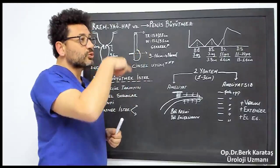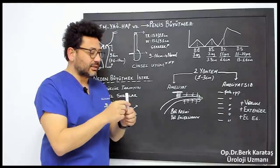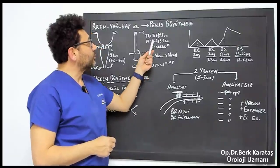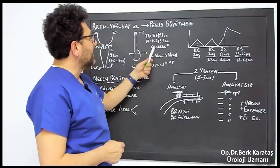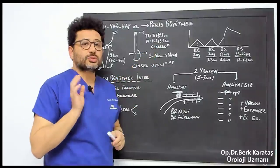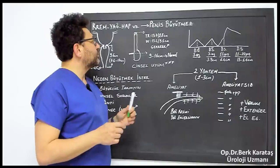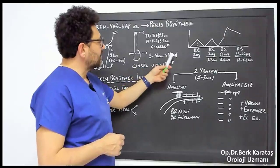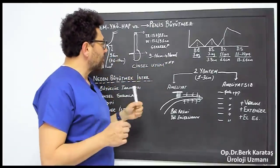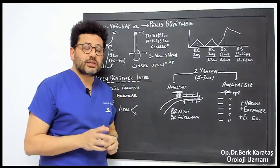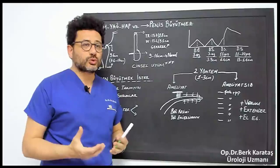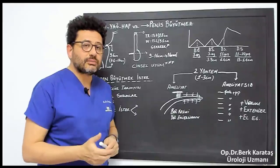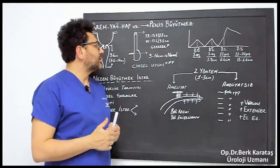The average length in Turkey is 13.7 cm, diameter 8.8 cm. In the world it is 13.4 by 9.1 cm, more or less the same. We can say the world average is around 13.5 cm. What do we call normal? If the penis is between 9 and 16 centimeters, we call it normal. Below 9 centimeters is called micropenis. Micropenis is a disease, a problem. There may be hormonal problems. There are people who have micropenis genetically, but this must be distinguished.